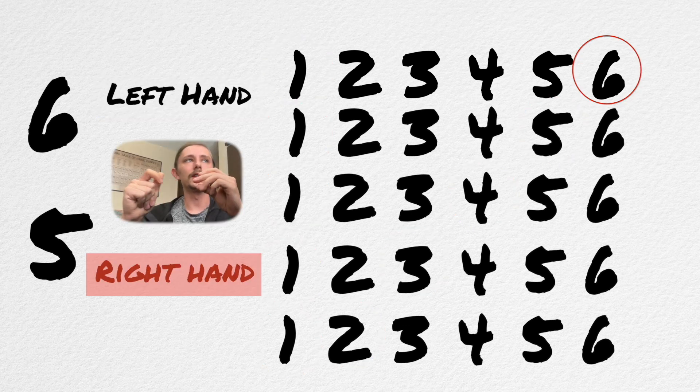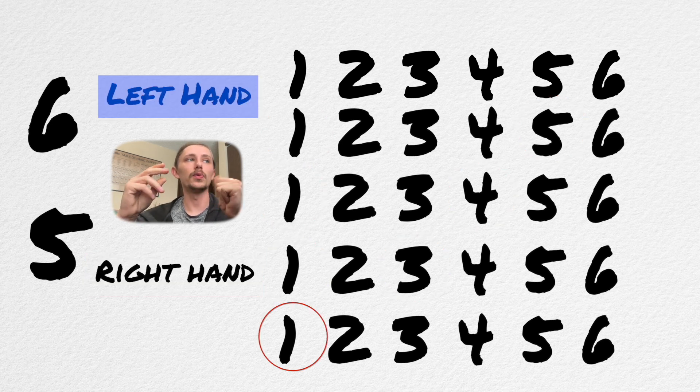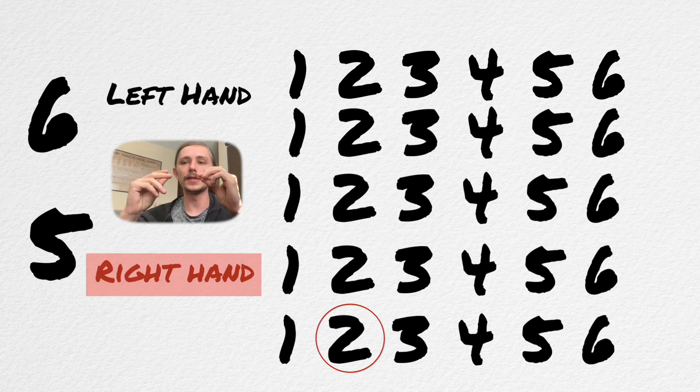1, 2, 3, 4, 5, 6. 1, 2, 3, 4, 5, 6. 1, 2, 3, 4, 5, 6. 1, 2, 3, 4, 5, 6. 1, 2, 3, 4, 5, 6, 1. [Counting through the six-against-five grid pattern, practicing the polyrhythm.]